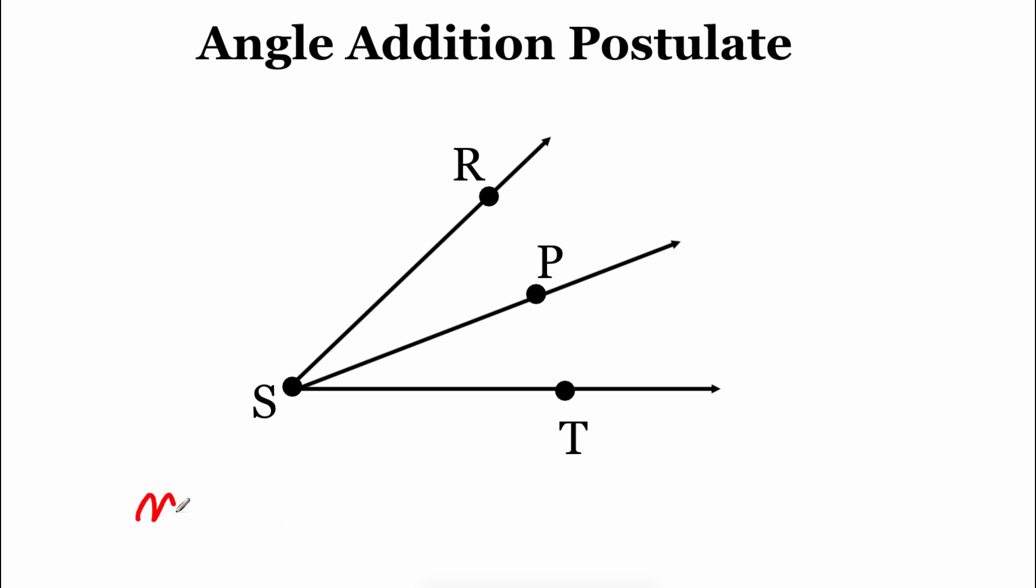So we would write that out as the measure of angle RSP, so that's this small angle on the top, plus the measure of angle PST, so the small angle on the bottom. When we add those things together, those two measures, it should equal the measure of the bigger angle, which in this picture is RST.